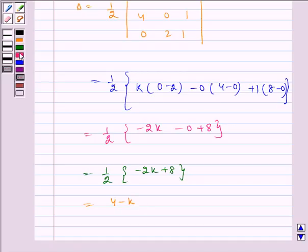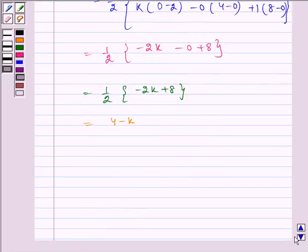Now we have got the equation as delta is equal to, that is area is equal to 4 minus k and this is given to be 4. So it implies 4 is equal to 4 minus k which implies k is equal to 0.